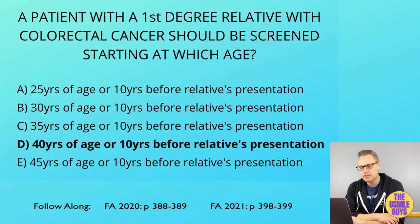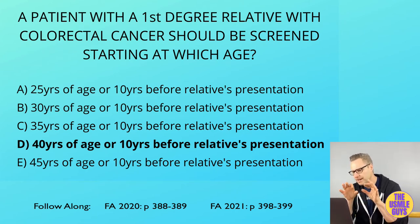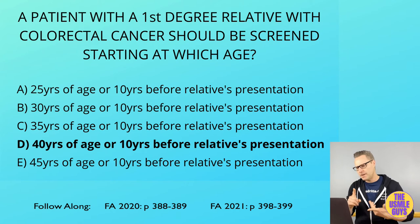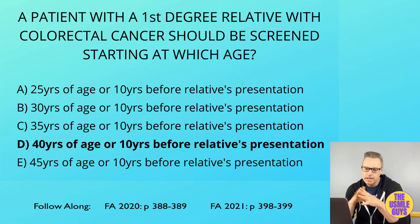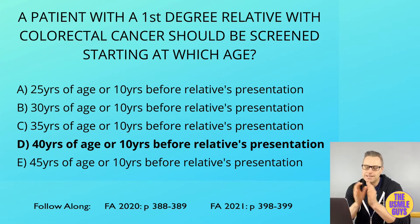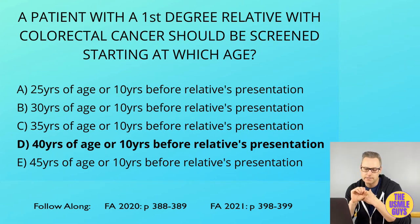Before going into the details of colon cancer, don't forget about the molecular pathogenesis of colorectal cancer. We have a couple of instability pathways: chromosomal instability, microsatellite instability, and the CpG island methylator phenotype pathways. Most cases of colon cancer arise from the chromosomal instability pathway, characterized by several mutations leading to eventual carcinoma, where APC gene mutations cause FAP and most sporadic colorectal cancer cases.